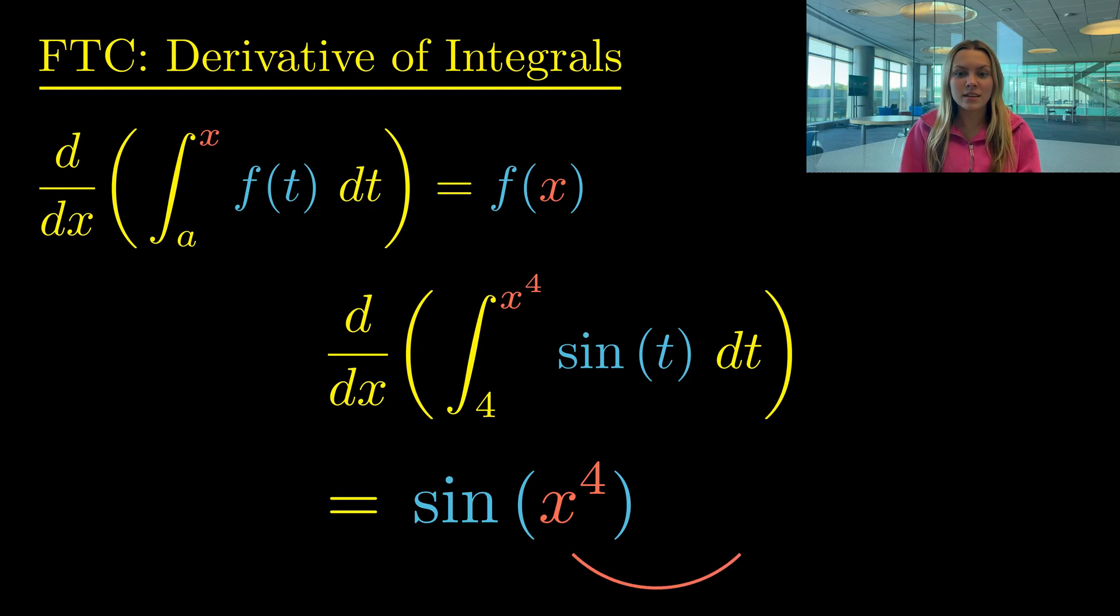And since our inside function is x⁴ and not just x, we have to use the chain rule. So we have to multiply by the derivative of x⁴, which is 4x³. And thus, our final answer is sin(x⁴) times 4x³. So this example was only slightly harder than our first one, as long as we remembered the chain rule.